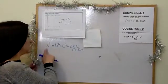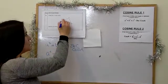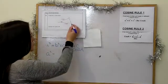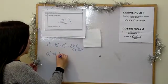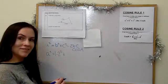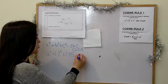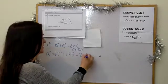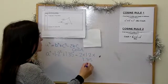The side we're trying to find is always a, so a² equals b² + c². We call the two sides b and c: 1.2² + 1.35², minus 2 × 1.2 × 1.35 × cos 35.